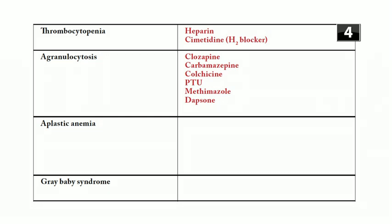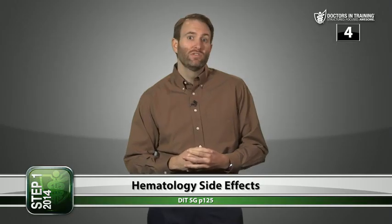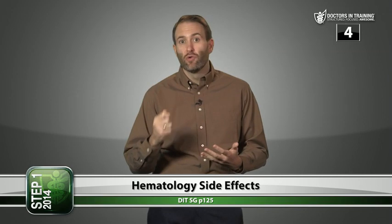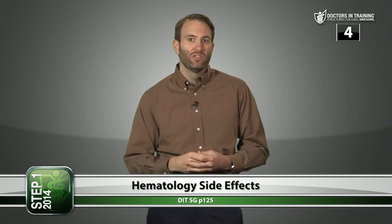Aplastic anemia can be caused by chloramphenicol, benzene, NSAIDs, propylthiouracil, and methimazole. Gray baby syndrome is caused by chloramphenicol — toxic accumulation of chloramphenicol metabolites in infants because UDP-glucuronosyltransferase is immature. Babies vomit, develop an ashen gray color, with cardiovascular collapse, hypotension, and cyanosis.